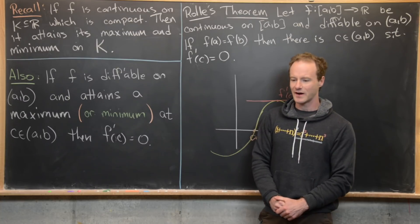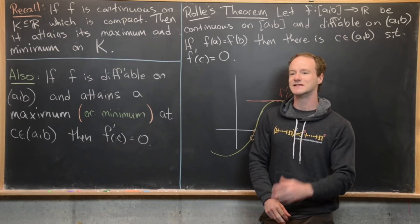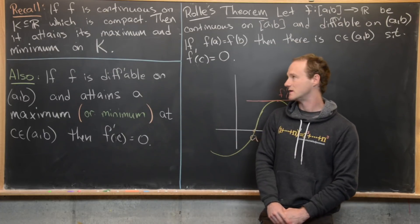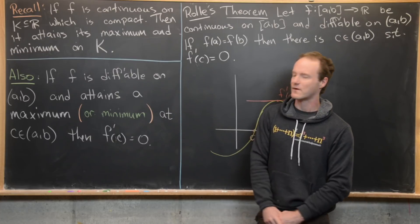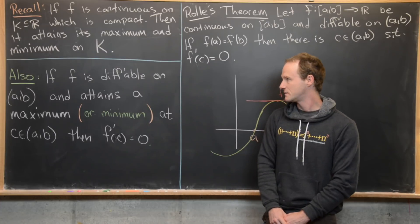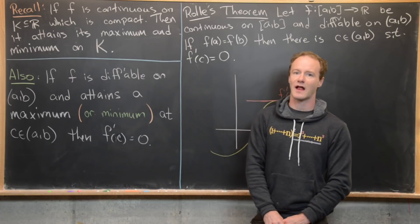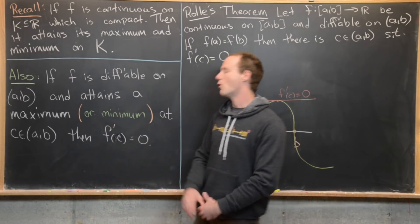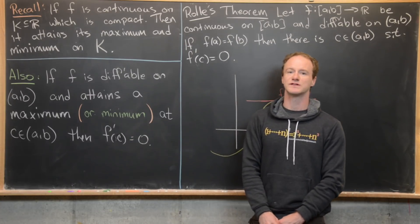So what that means is there is some point C in K where F of C is greater than or equal to F of anything else from K, and vice versa for a minimum. Then we have the following result, which is a little more specific: if F is differentiable on the open interval (a, b) and it attains a maximum or minimum at C in (a, b), then F prime of C is equal to zero.